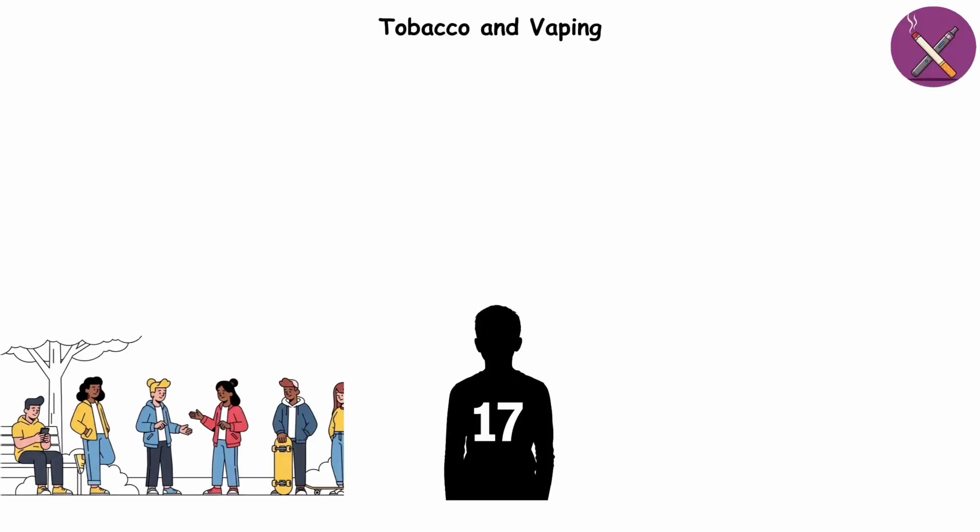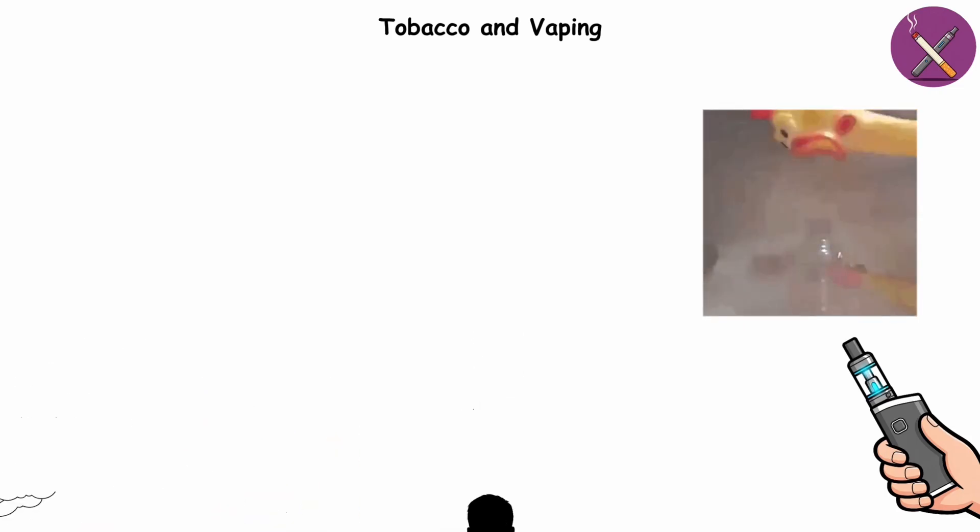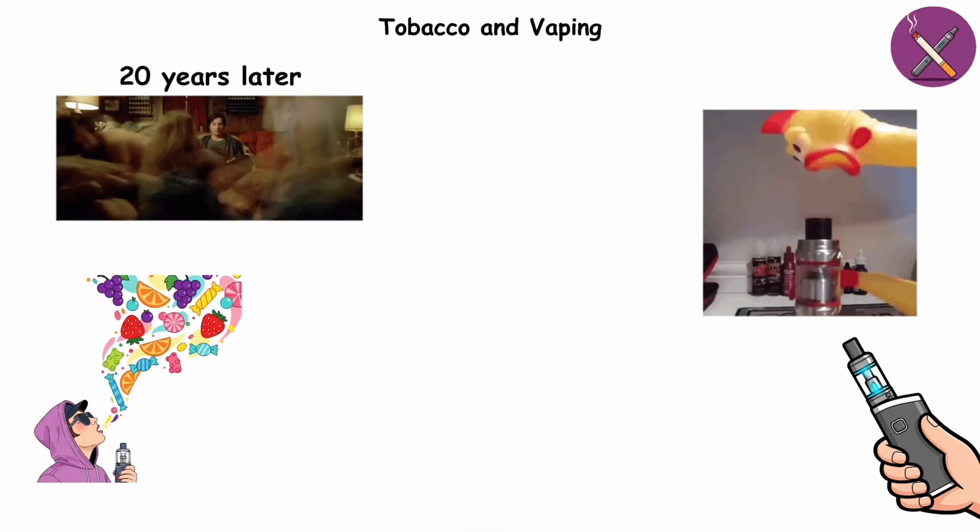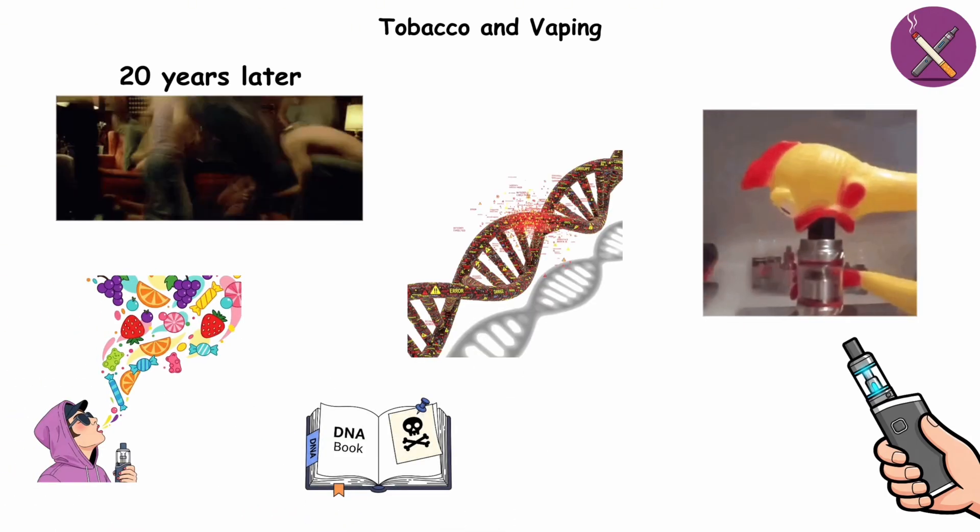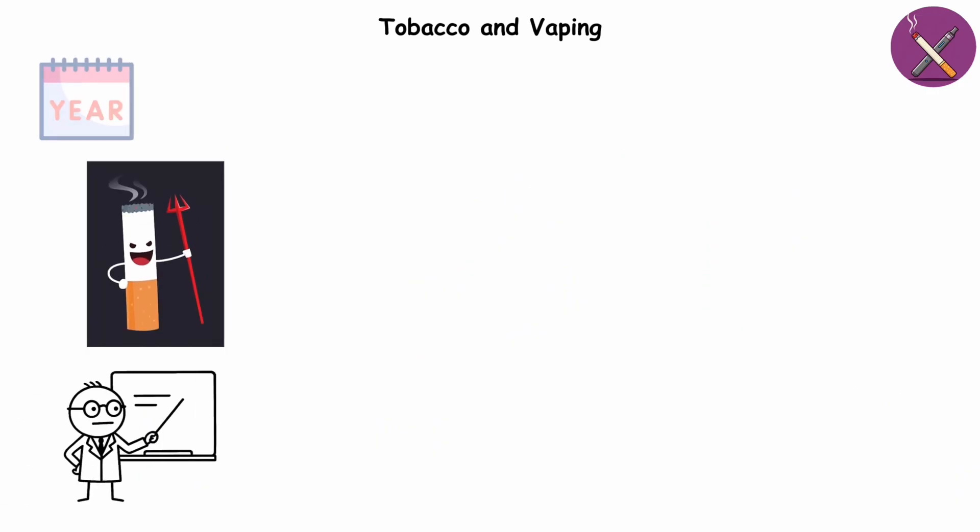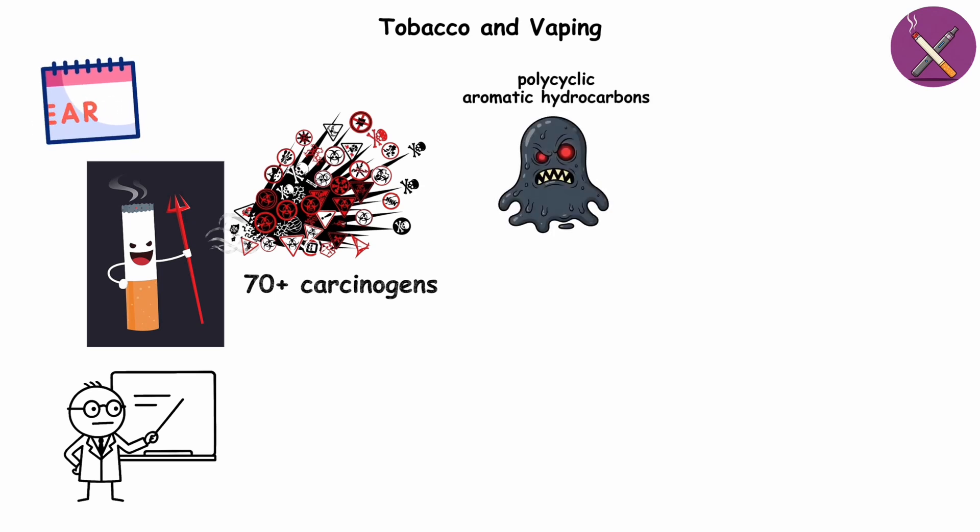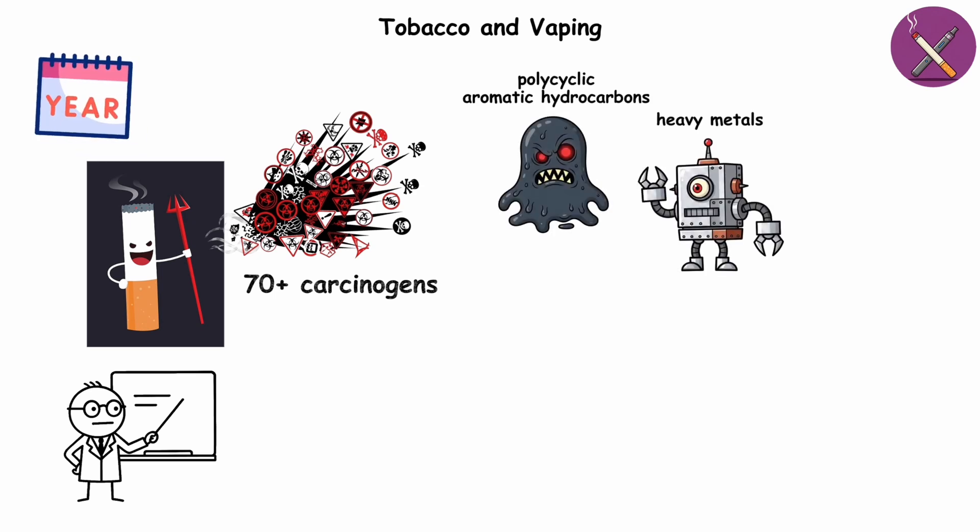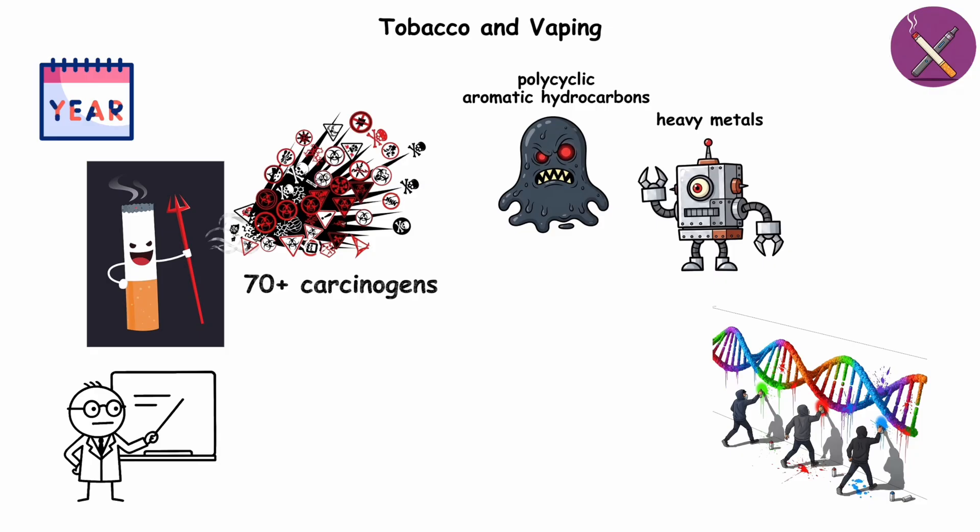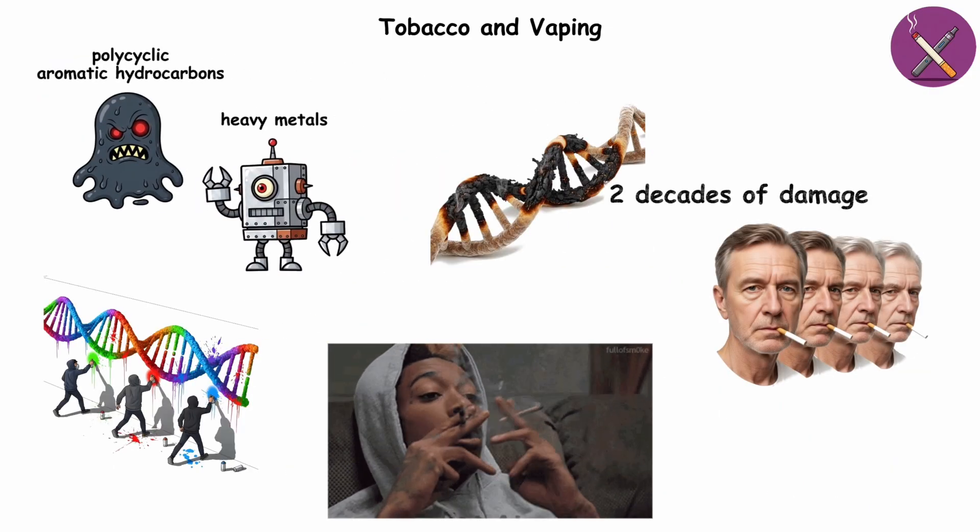Tobacco and vaping. Picture this. You're 17, hanging out after school, and someone passes you a vape. It's just flavored smoke, they say. Fast forward 20 years. Those harmless puffs could be leaving a not-so-nice note in your DNA. Here's the deal. Cigarettes have been the villain in the cancer story for decades, packed with over 70 carcinogens like polycyclic aromatic hydrocarbons and heavy metals. Think of them as tiny vandals tagging your DNA with errors, one puff at a time. Start young, and by 40, you've got two decades of damage baked in.